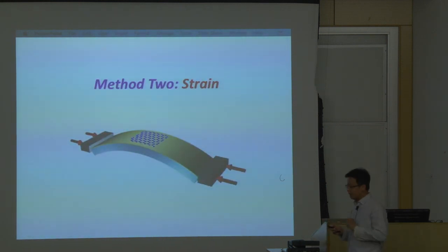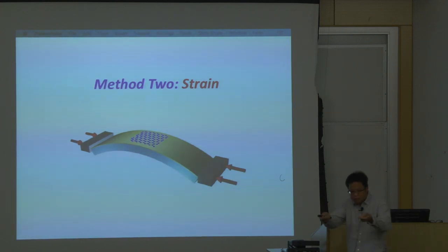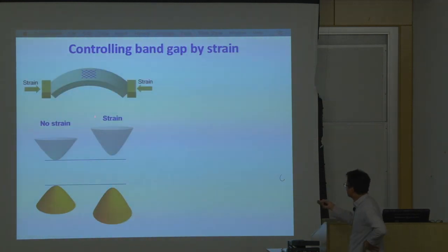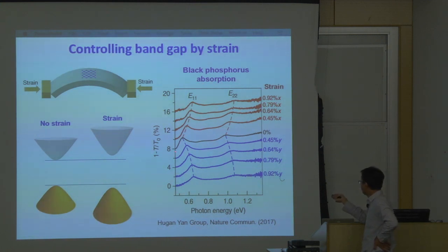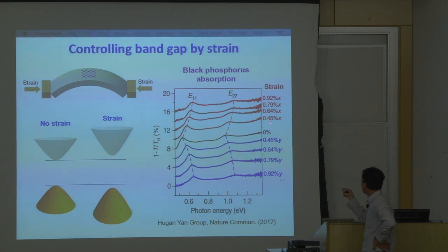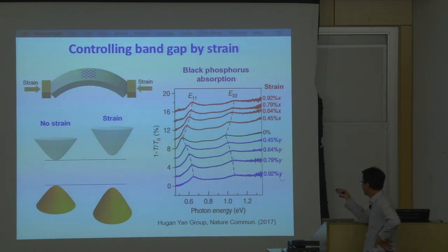The second method, besides the electric field effect, is strain. You put the 2D material on a flexible substrate, then bend the substrate so that the 2D material is stretched — being only one monolayer, it's very easy to stretch. By stretching the material, you can also change the band gap size, and the effect can be quite noticeable. For example, in the absorption spectrum of few-layer black phosphorus, applying less than one percent of strain shifts the excitonic absorption peaks for quite a lot. Strain is another tool to tune the band gap size in the material.